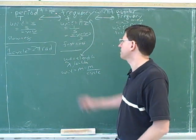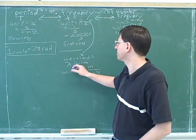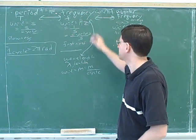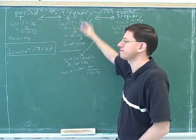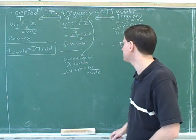So that would be our lambda. So a very common question is to be given the frequency and asked for the lambda, or given the lambda and asked for the frequency. So I put this arrow between these to show that oftentimes we have to go back and forth between these two concepts.